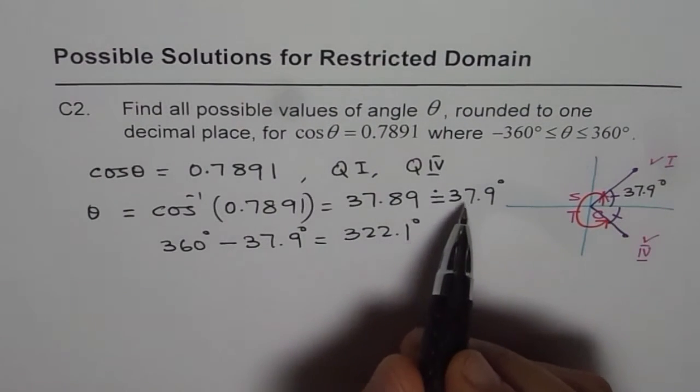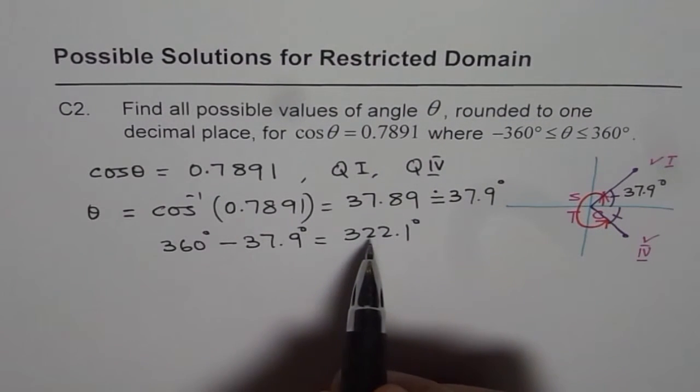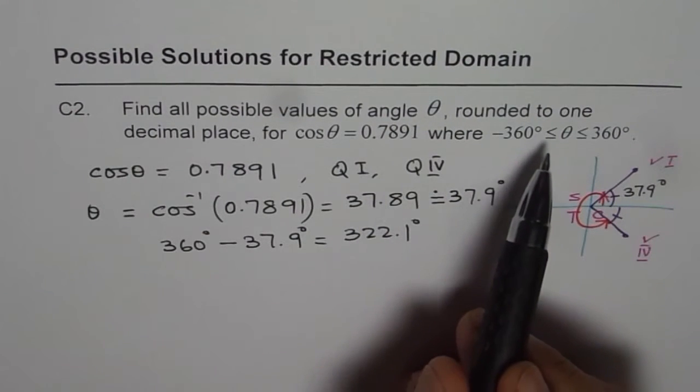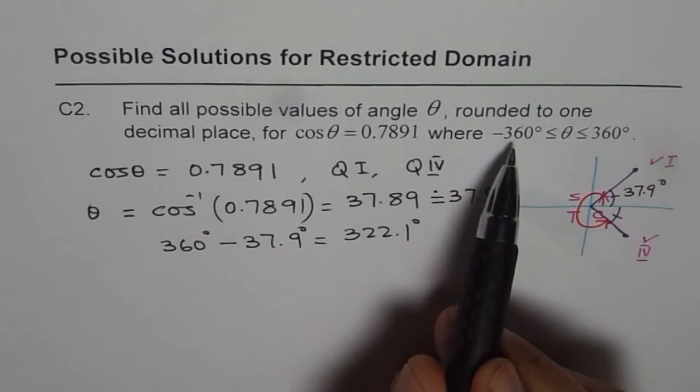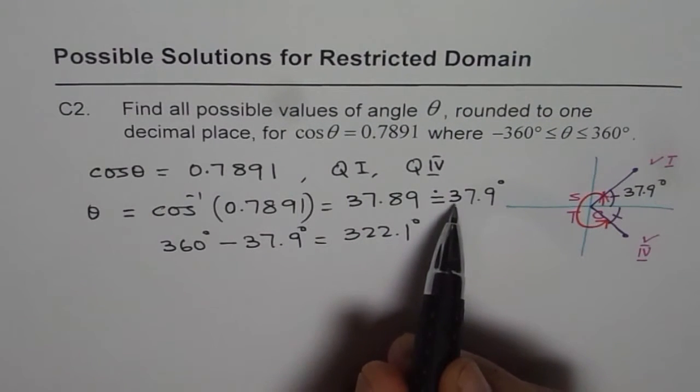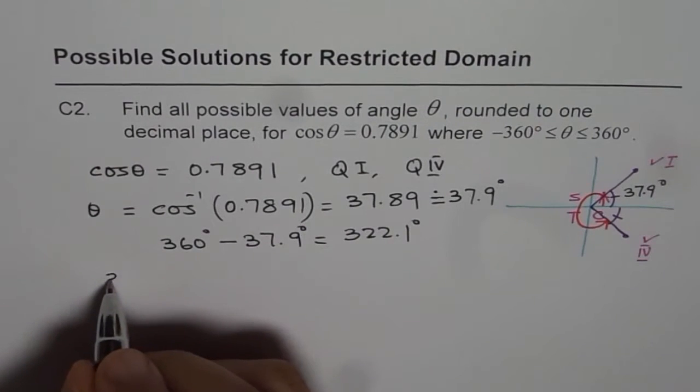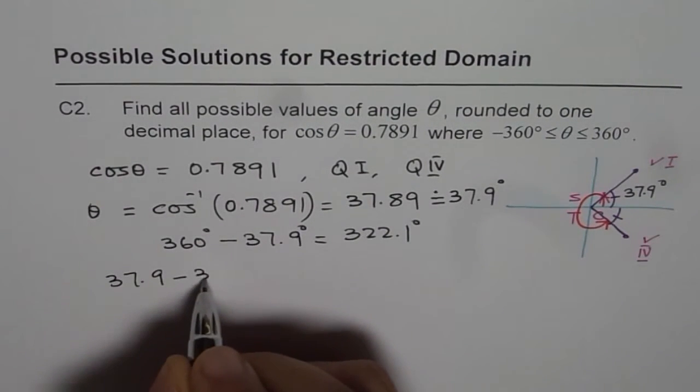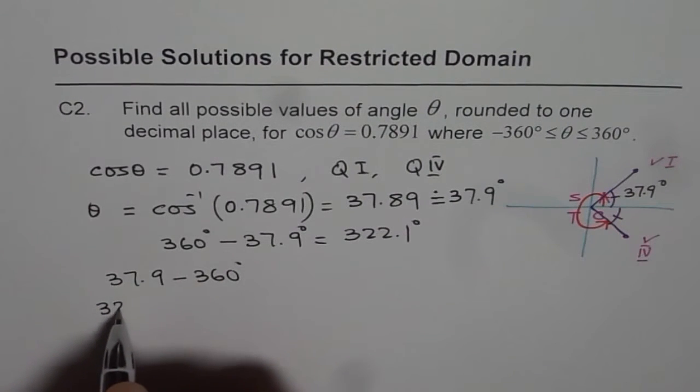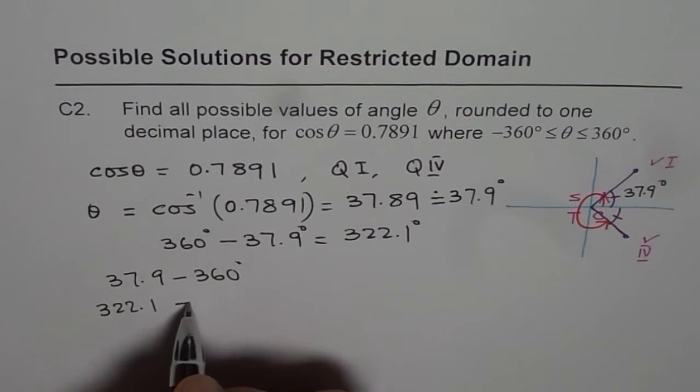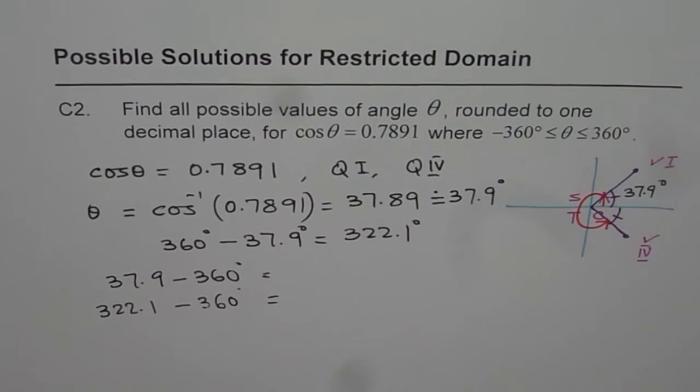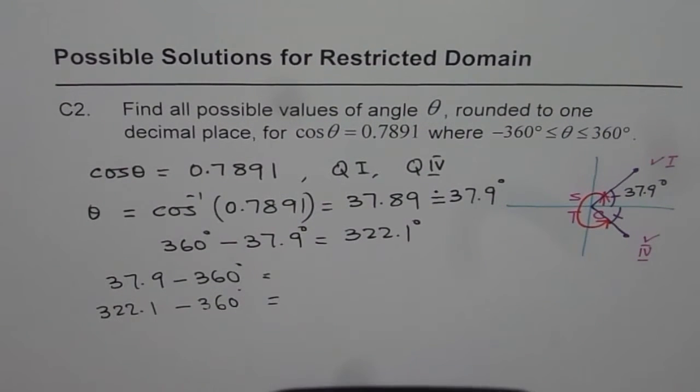So we already have two solutions. One of them is 37.9, the other one is 322.1. So to get in the interval minus 360 to 0, we should take away 360 from these values. So the other values are 37.9 minus 360 degrees and 322.1 minus 360 degrees. So these will give us other two values of theta.